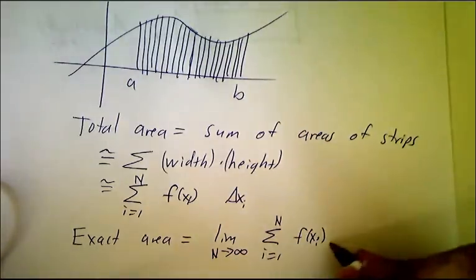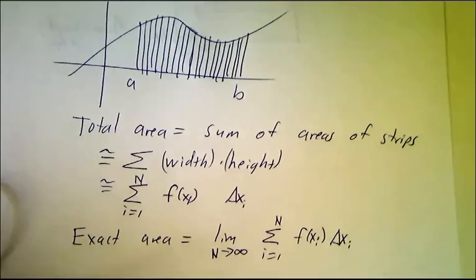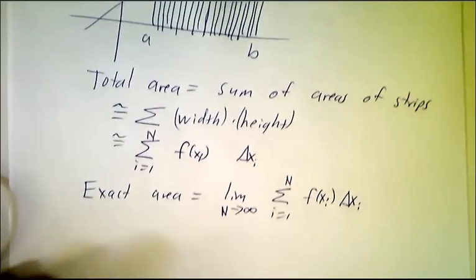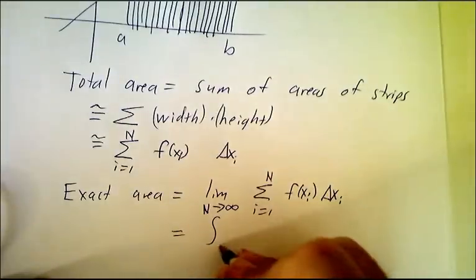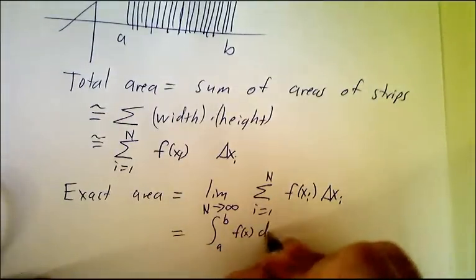And for each strip, you take the value of the function times the width of the strip. And we give this a name, we call this an integral. We call this the integral from a to b of f dx.